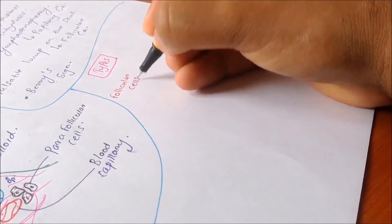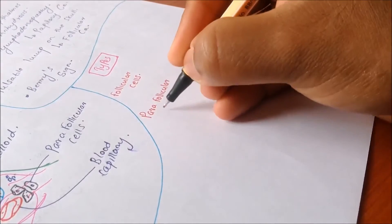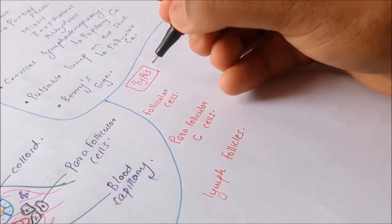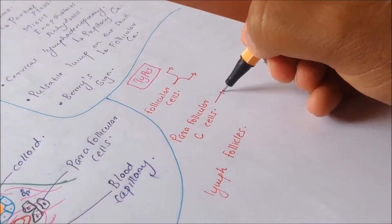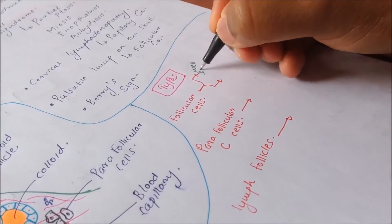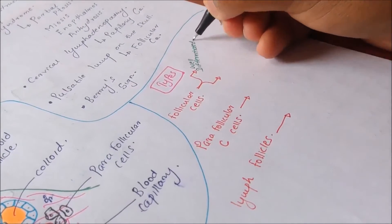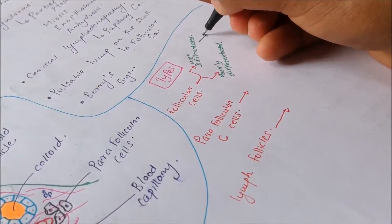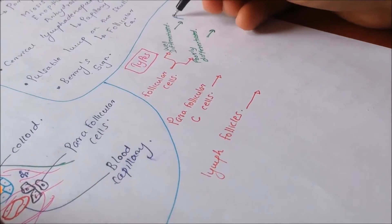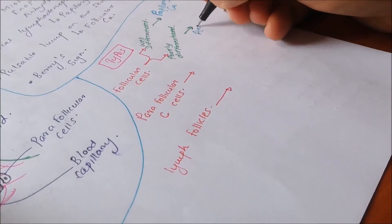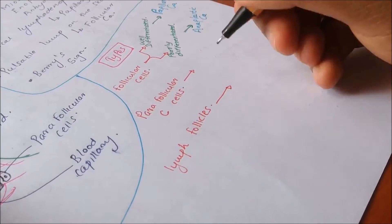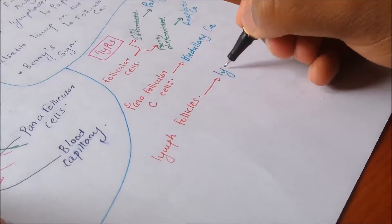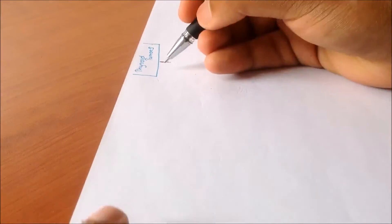To study the types of cancers in the thyroid gland, we just look at the histology. There are follicular cells, parafollicular C cells, and lymph follicles. Each neoplasia can be either well-differentiated or poorly differentiated. A well-differentiated follicular cell develops into papillary carcinoma; a poorly differentiated one develops anaplastic carcinoma. Medullary carcinomas arise from parafollicular C cells, and lymphomas from lymph follicles.